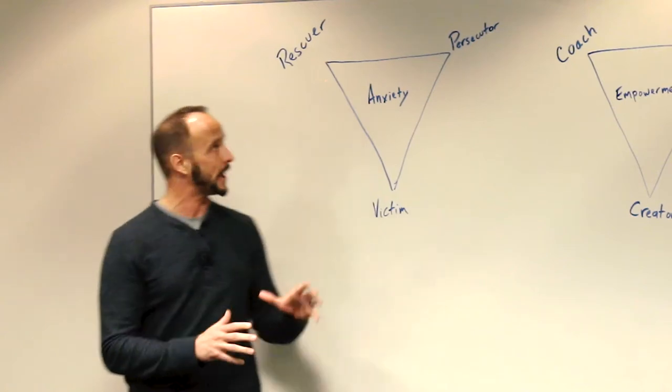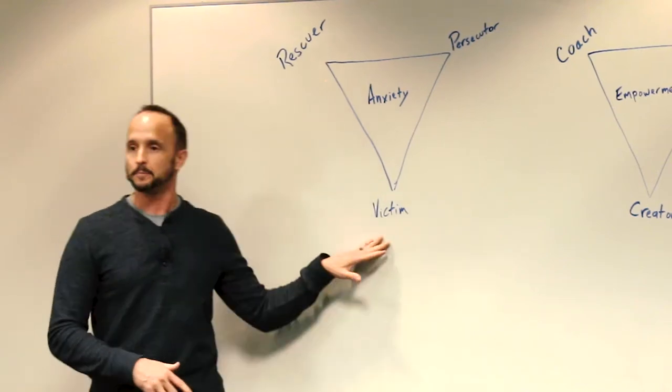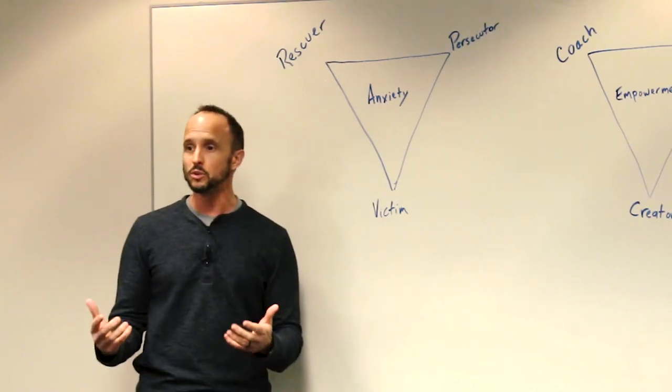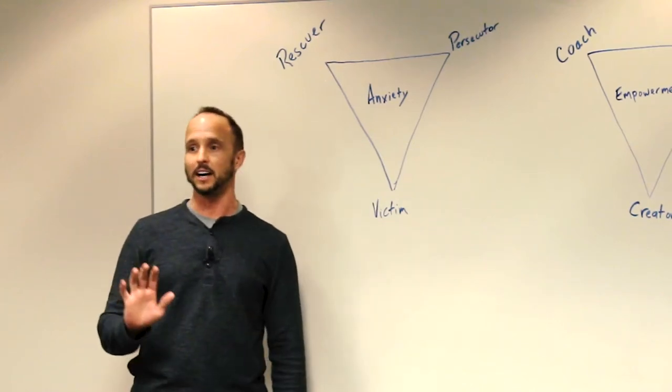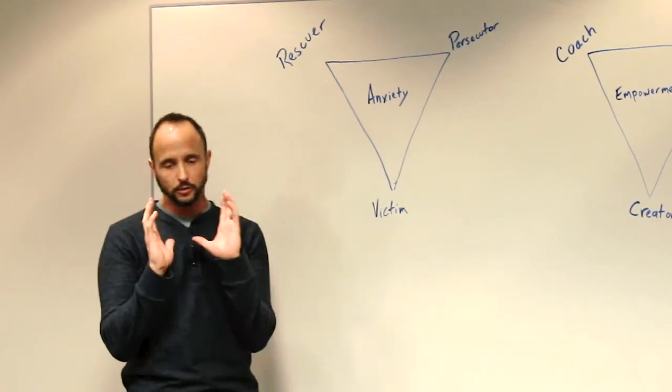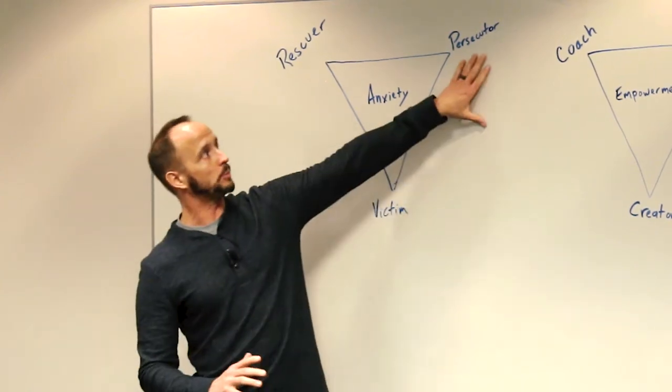So with the Drama Triangle, there's always a victim. This person feels helpless, like there's nothing that they can do. They oftentimes can't see opportunities or options for the future, and they always focus their attention on the persecutor.